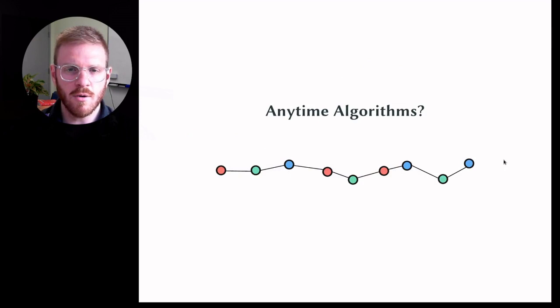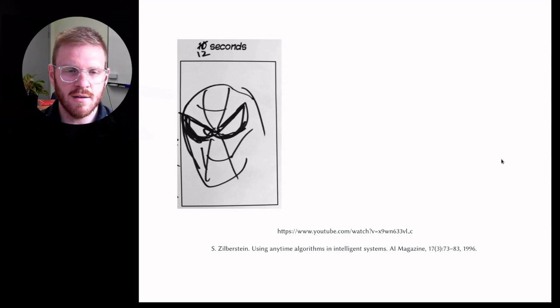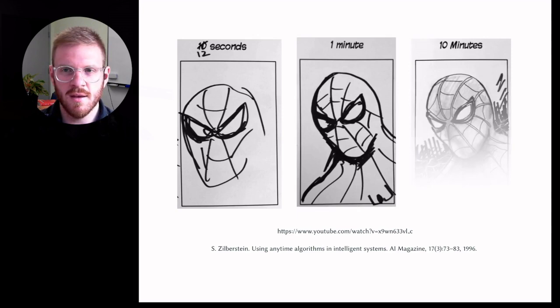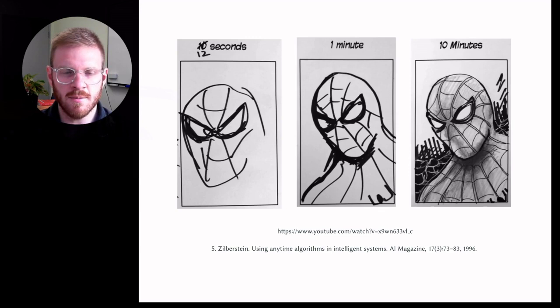So what is an Anytime algorithm? Imagine that you're trying to draw a picture of Spider-Man. Someone says you only get 10 seconds, in this case it took 12 seconds but here's what you get. But what if you had a minute? That looks a bit better. And what if you had 10 minutes? That looks even better. So essentially an Anytime algorithm you can terminate at any time but the quality of the result will improve as the amount of time the algorithm runs increases.